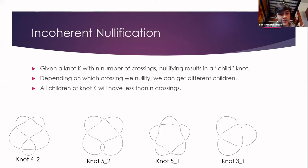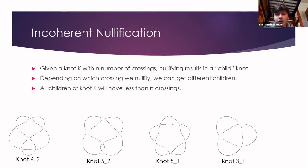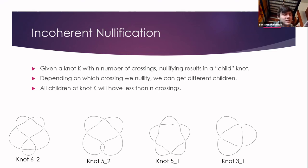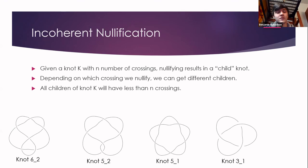So if we have a knot k with n crossings and we perform a nullification on any of its crossings, we will get what we call a child knot. Depending on which crossing we nullify, we can get different children. If you look at knot 6_2, depending on which crossing we nullify, we could get any of those three knots to the right — they are all its children. A property of incoherent nullifications is that they make the knot simpler and reduce the number of crossings, so there will always be a way down to the unknot — just a closed loop.